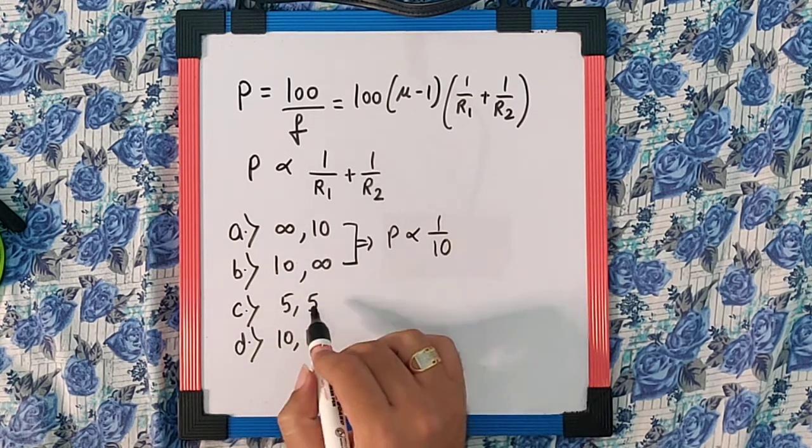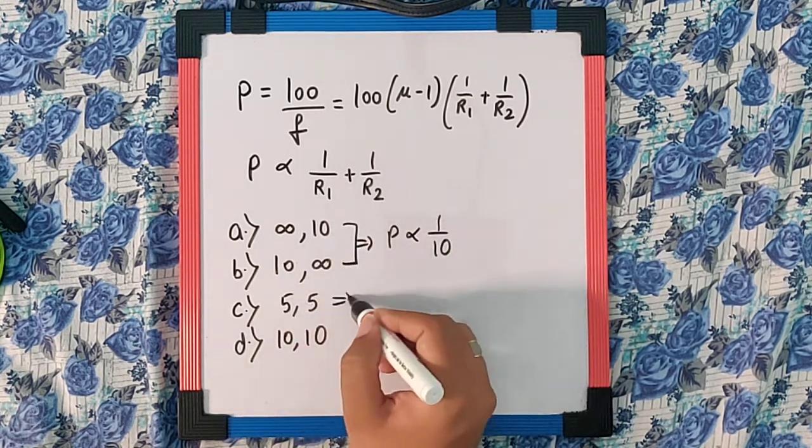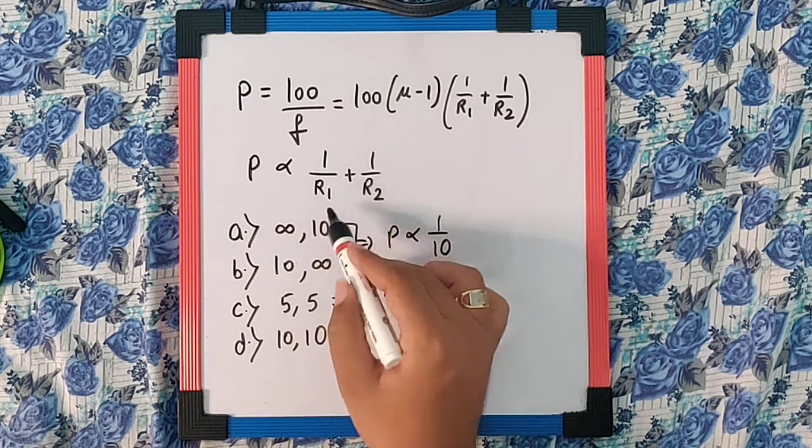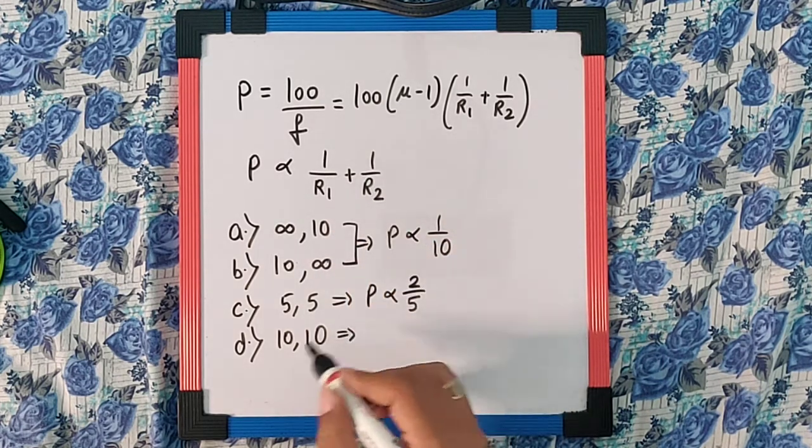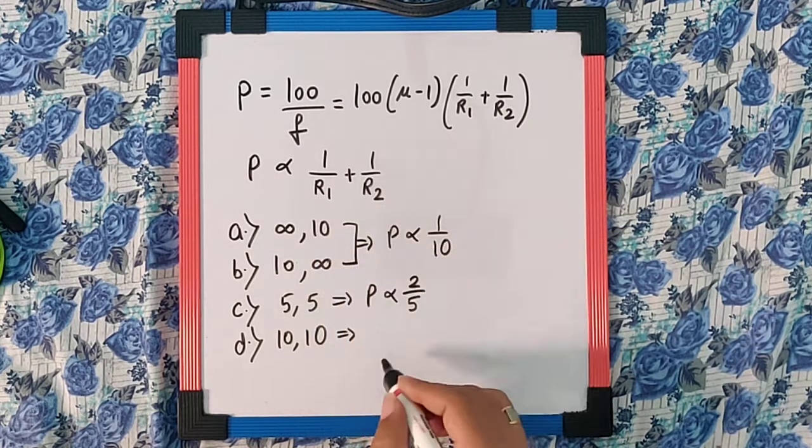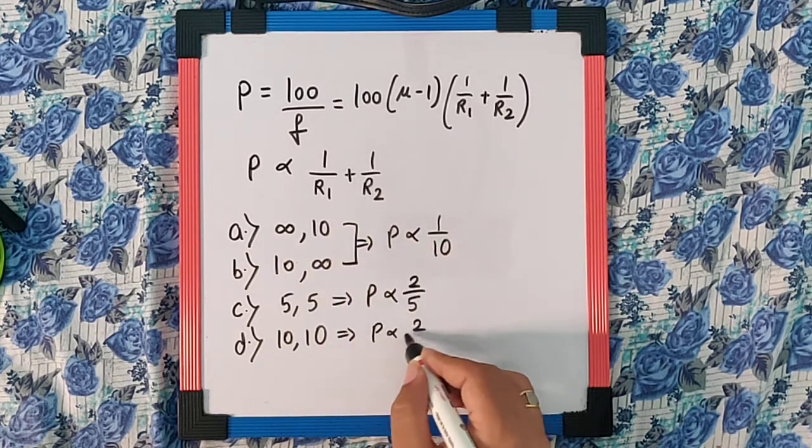Now if I use it for option number C, I am going to get the power correlation as 1 by 5 plus 1 by 5 as 2 by 5. And for the case of 10 and 10, the power is going to be proportional to 2 by 10.